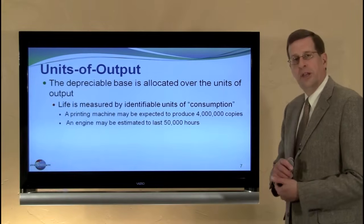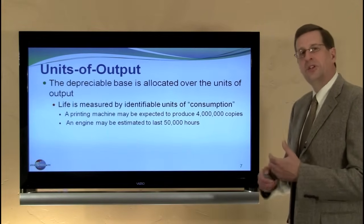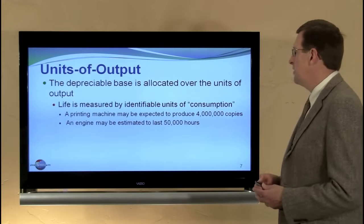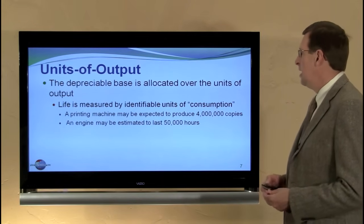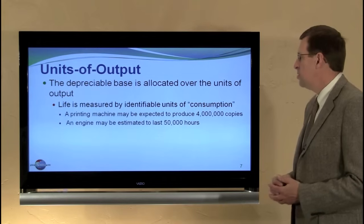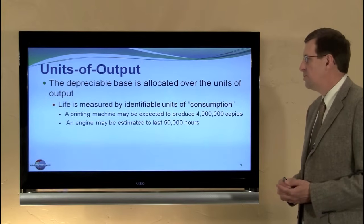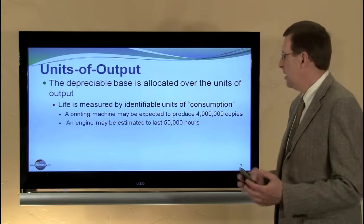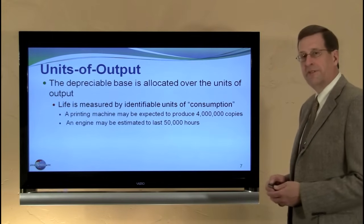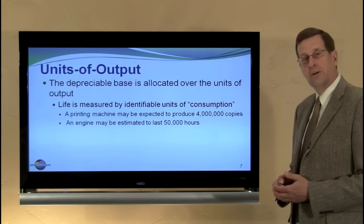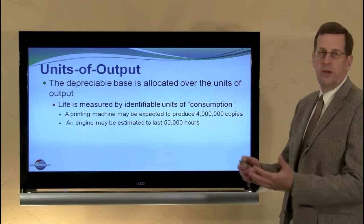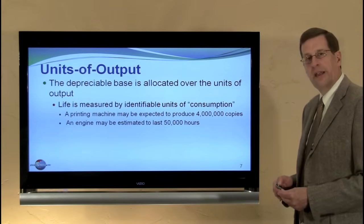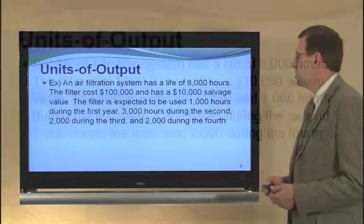Let's look at units of output. It's very much like the straight line method except rather than using time as the allocation base, we're going to use units of production as the allocation base. Life is measured by identifiable units of consumption. A printing machine might produce four million copies; an aircraft engine may last 50,000 hours. As we print copies or as we run the engine, we allocate a proportionate amount of cost to represent the amount consumed.